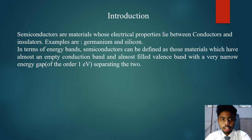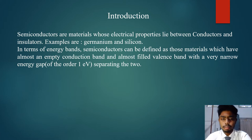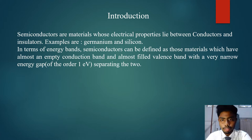Semiconductors are materials whose electrical properties lie between conductors and insulators. Examples are germanium and silicon. In terms of energy bands, semiconductors can be defined as materials which have an almost empty conduction band and almost filled valence band, with a very narrow energy gap of the order of one electron volt separating the two.